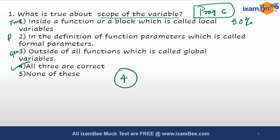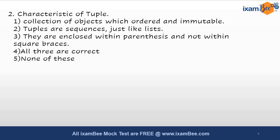That was our first question. Moving to the second question, it is related to tuples, and this belongs to the category that accounts for 10% in the phase one examination. You have to identify which statement is correct in regards to tuples. You need to be clear on what exactly a tuple is. Option one says: a collection of objects which are ordered and immutable. Option two says tuples are sequences just like lists. Option three says they are enclosed within parentheses and not within square braces. Our answer here is again all three are correct.